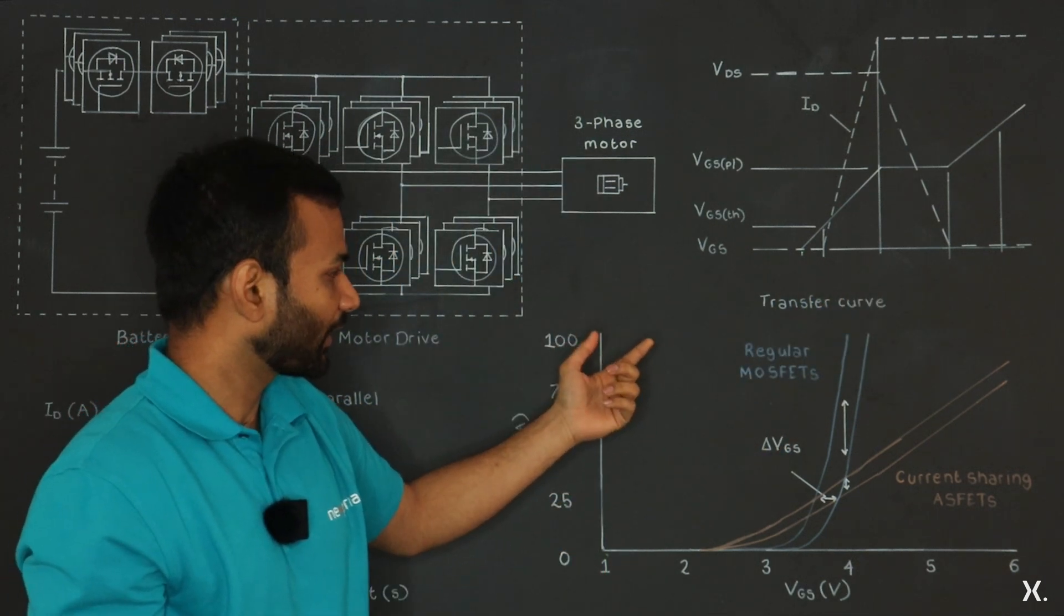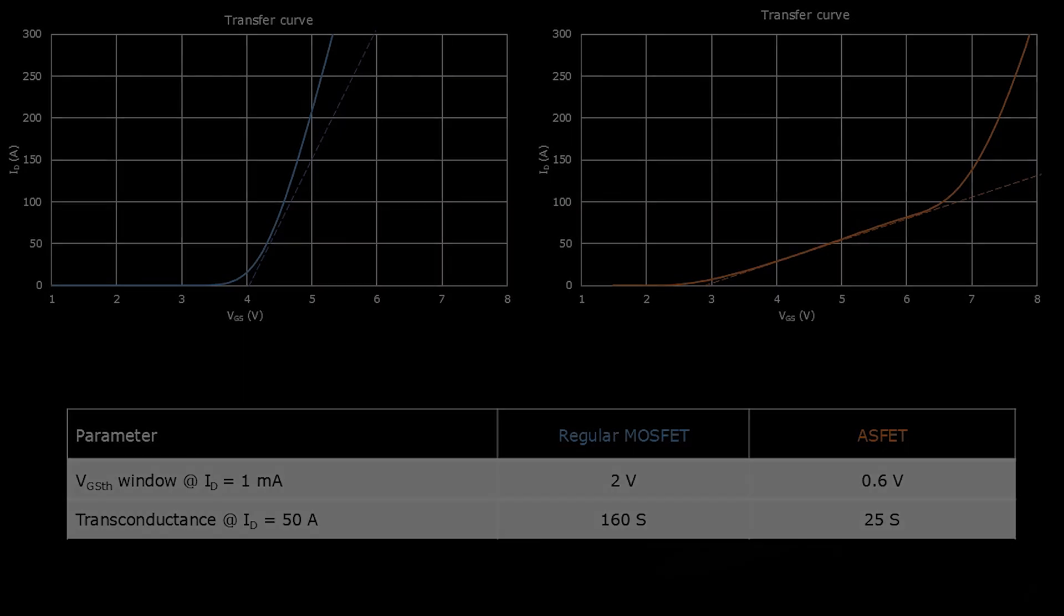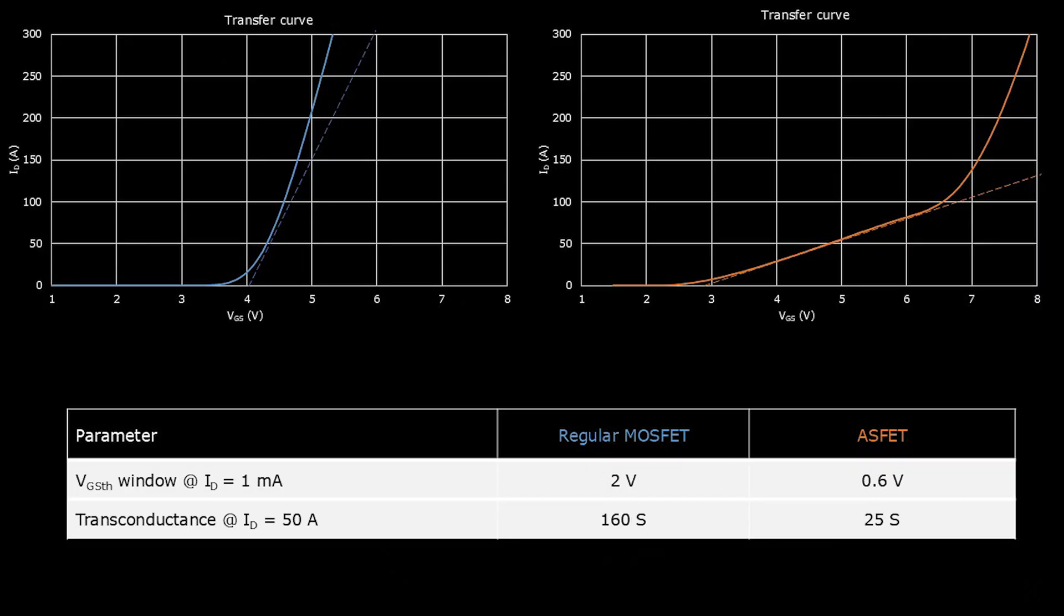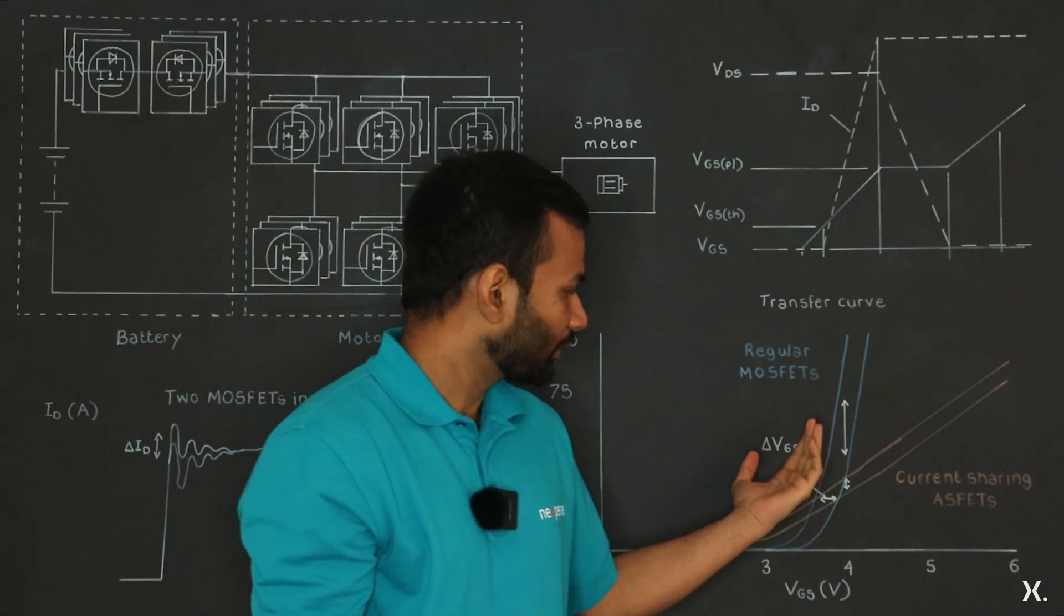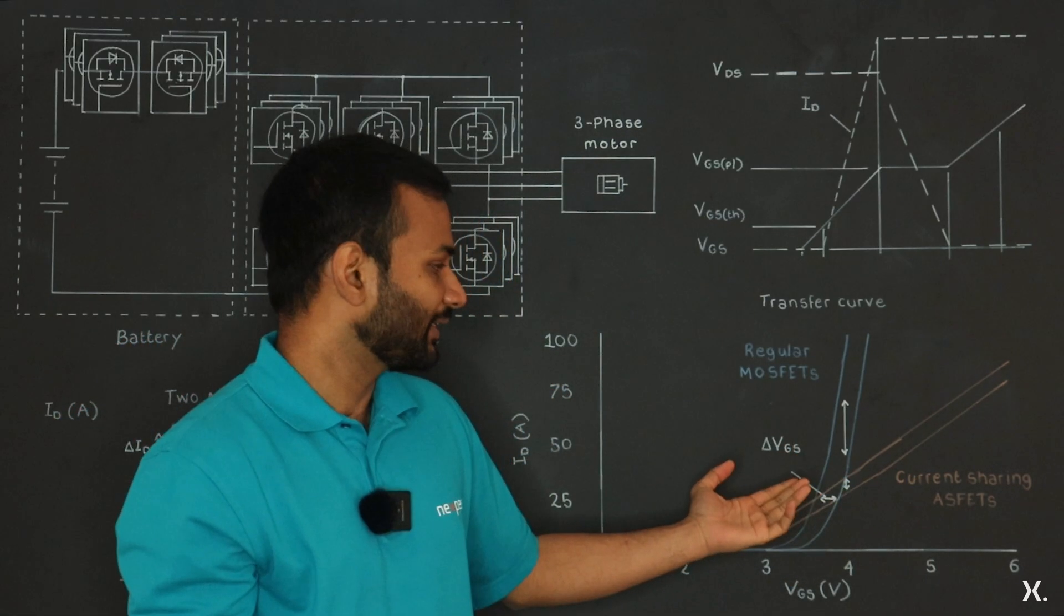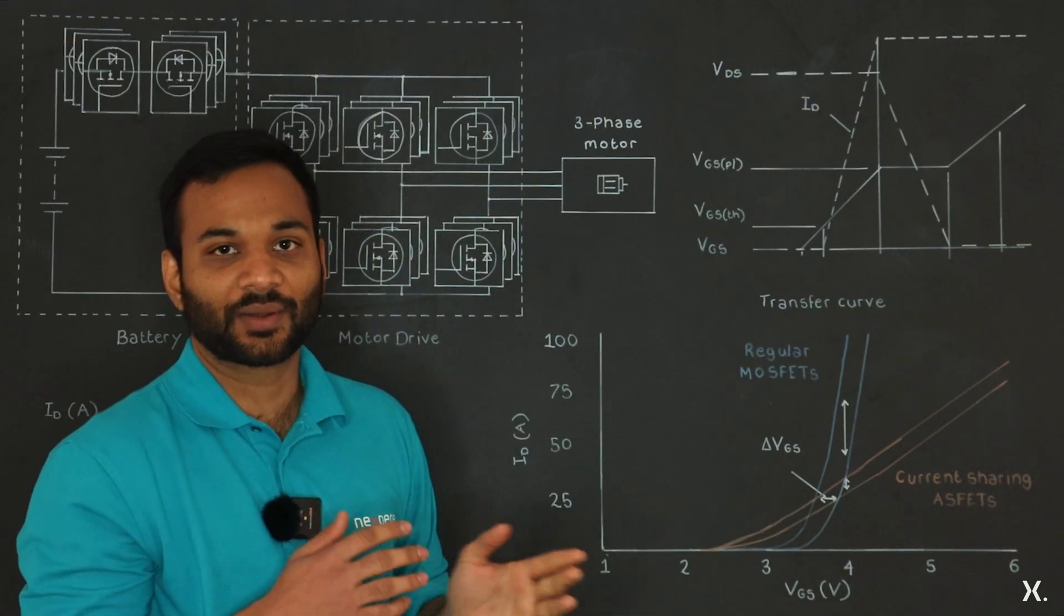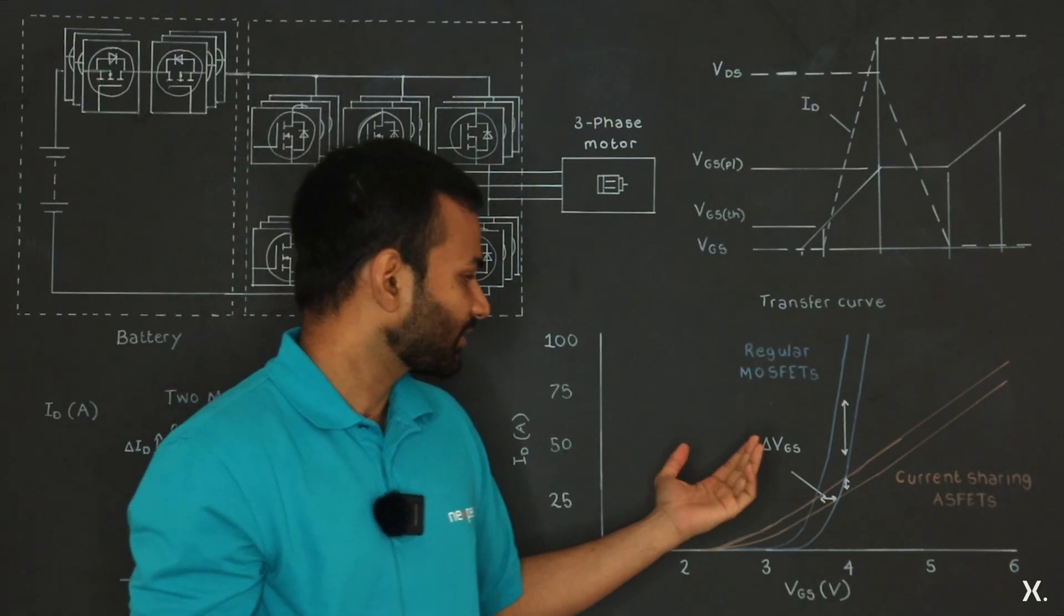If you look at the transfer curves for the pair of regular MOSFETs and ASFETs with equal VGS separation, the regular MOSFETs can mismatch by up to 50A at VGS equals to 4V, while the ASFETs only mismatch by up to 8A. This is due to the softer transconductance of the ASFETs, which means lesser sensitivity to parameter variation and better sharing.